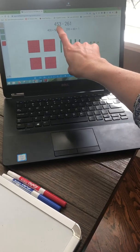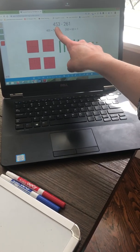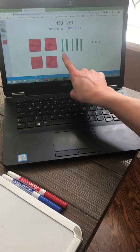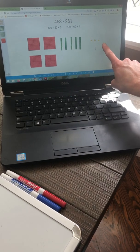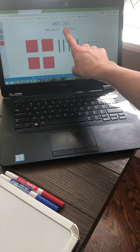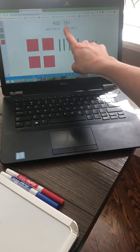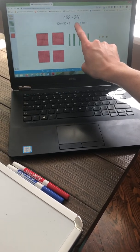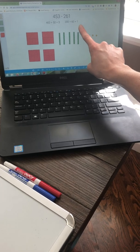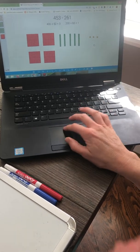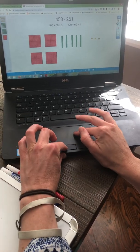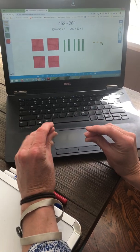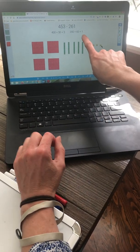So we represent our minuend with our base 10 blocks. So we've got 453. Because we're subtracting, we're taking away or comparing. So we must take away 261. So today we are going to take away 261, but we might have to borrow. Let's see if that happens.